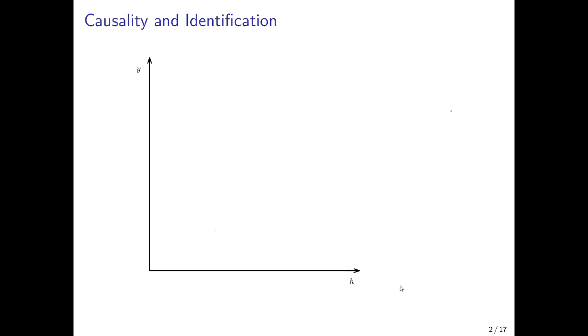To illustrate this, we plot here population health on the horizontal axis and per capita GDP or income on the vertical axis. Now let's assume that the causal effect of health on income per capita GDP is given by this curve here.